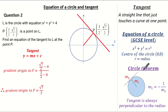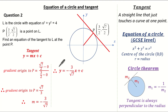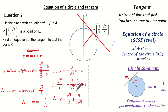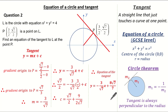Remember our circle theorem: the gradient of the tangent is the negative reciprocal of the radius gradient, so the gradient of the tangent is minus 3 over root 7. Substituting what we know, we have y equals minus 3 over root 7 times x plus c. Using the coordinate of P to substitute the x and y values, we can work out c. Therefore the equation of the tangent is y equals minus 3 over root 7 x plus 8 over root 7.